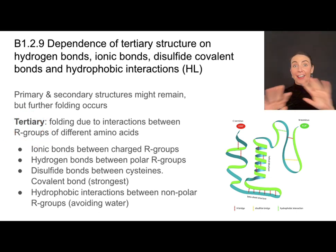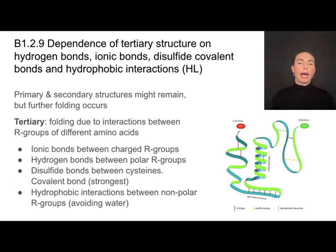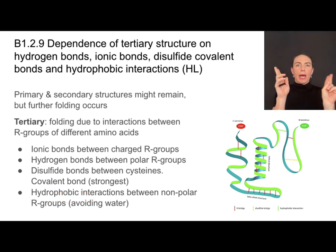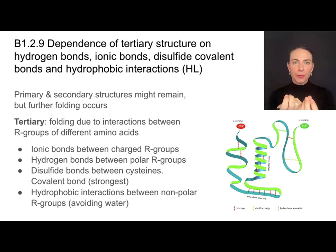This can look like a lot of different things. I can have ionic bonds between different charged R groups, hydrogen bonds between polar R groups, disulfide bonds — a type of covalent bond between two amino acids that both include sulfur, which is a really strong one — or even hydrophobic interactions, like two nonpolar amino acids folding in and hiding with each other to get away from water. All of these different interactions result in very complex additional folding beyond secondary structure.